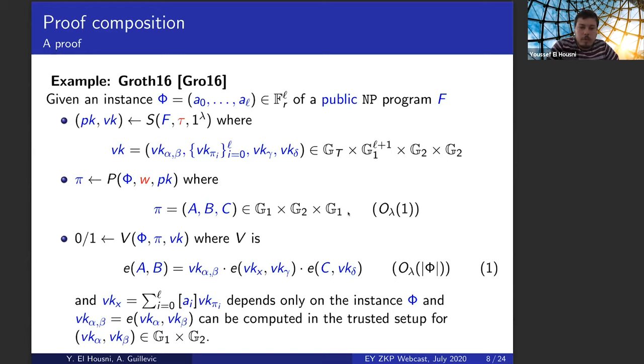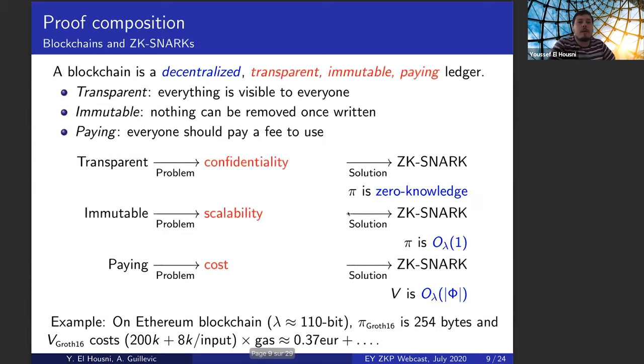From now on, we will be focusing on Groth16 as an application. So just to motivate this talk: a blockchain is a decentralized, transparent, immutable payment ledger. But those transparent, immutable properties result in some confidentiality problems, immutability, which means that everything written once, cannot be removed. Some scalability problems and paying fees result in some cost inefficiencies. So ZK-SNARKs are one solution to solve these three problems because the proof is zero-knowledge. So we have confidentiality. The proof, as in Groth16, for instance, is constant size. So we solve also somewhat the scalability problem and the verification is also constant with respect to the instance, which solves somewhat also the cost problem.